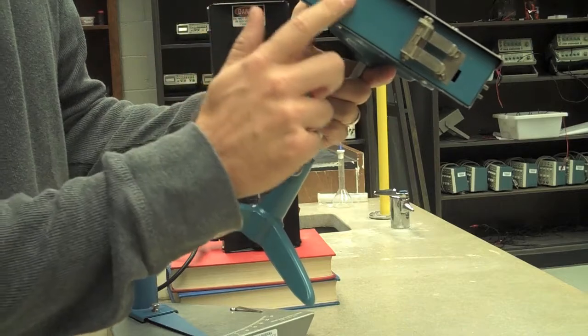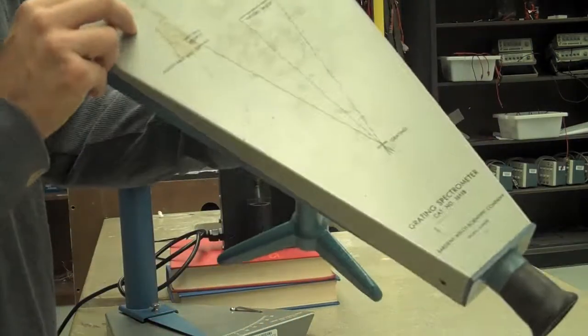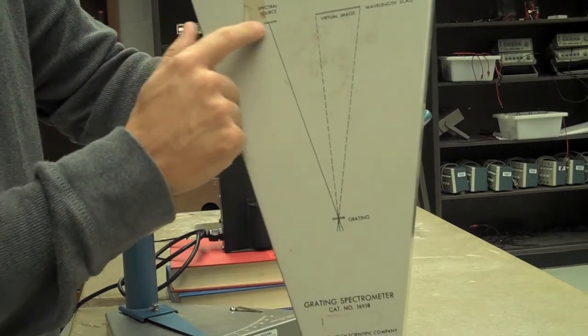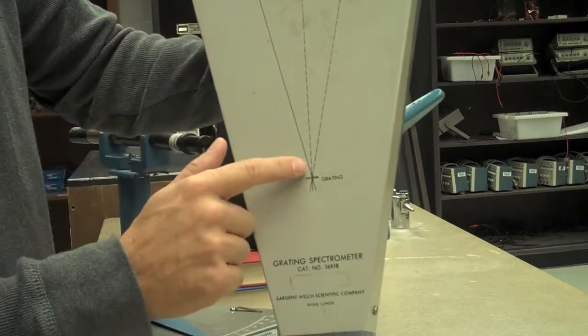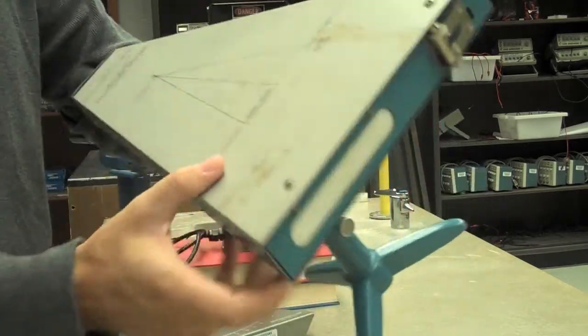This is a scale. Light comes in through here and illuminates the scale. If you look right here, the light comes in through the adjustable slit and then the grating. The image appears over here in front of the scale too.